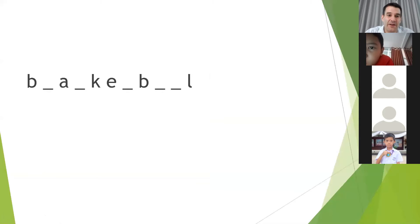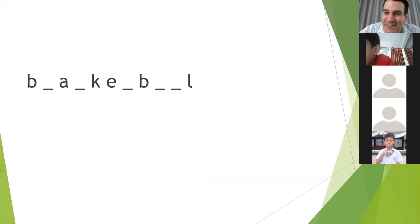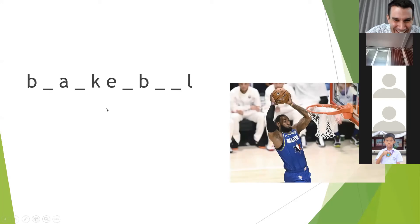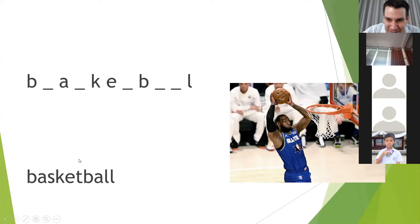How about this word? Basketball. Do you know how to spell basketball? B — the B and the A are here, this is S. I made a mistake, but yes, basketball.